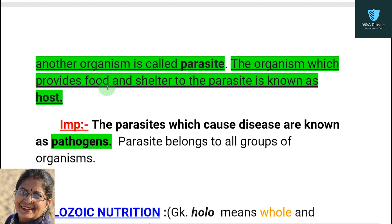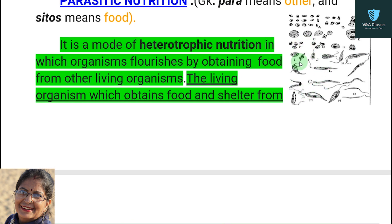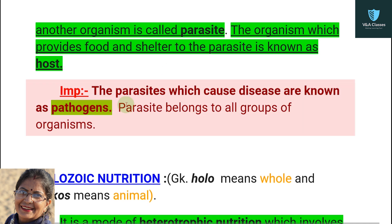The organism which provides food and shelter to the parasite is known as the host. Note this important definition for board exams: the parasites which cause disease are known as pathogens. Parasites belong to all groups of organisms — they exist in both plants and animals.